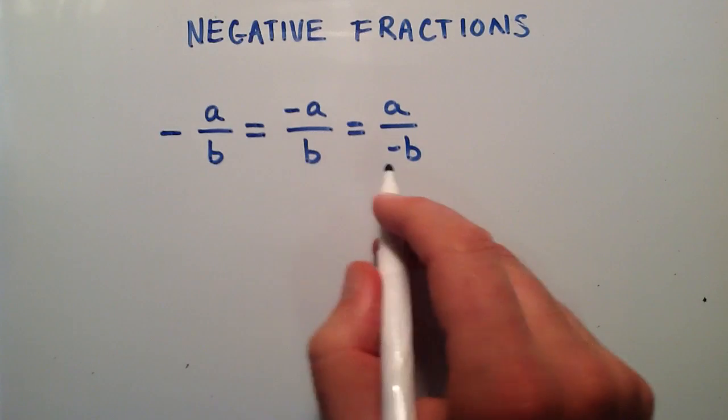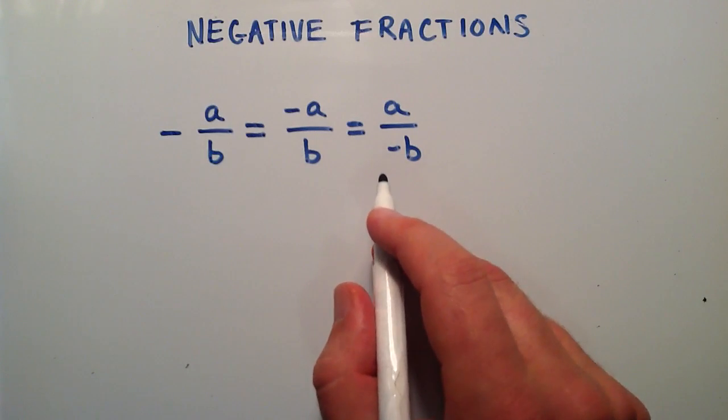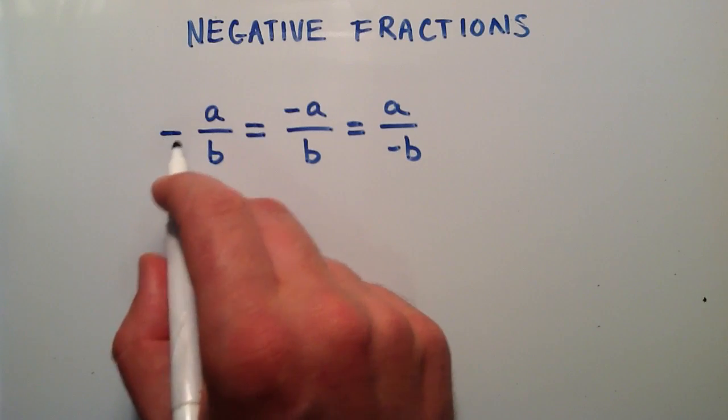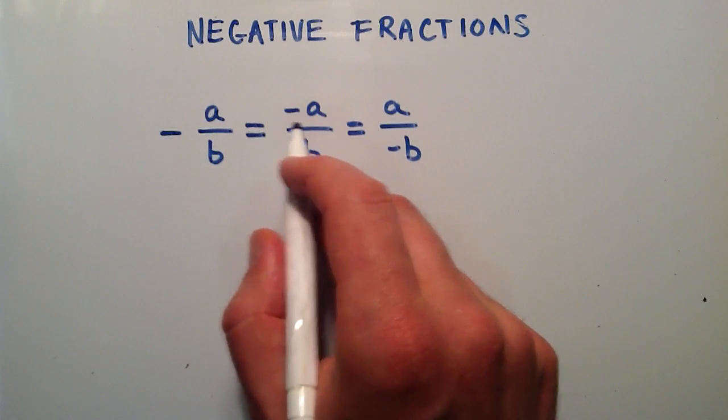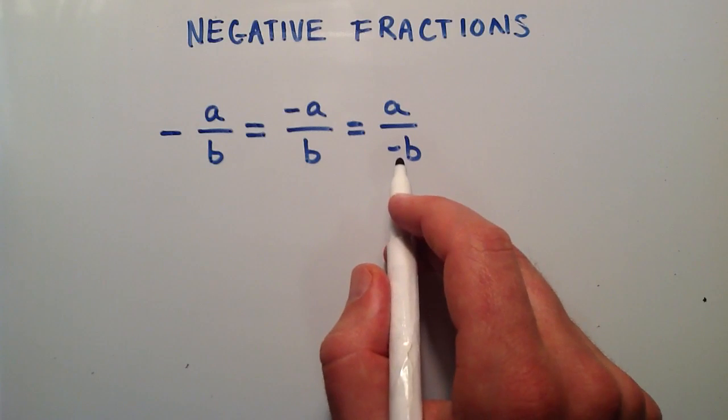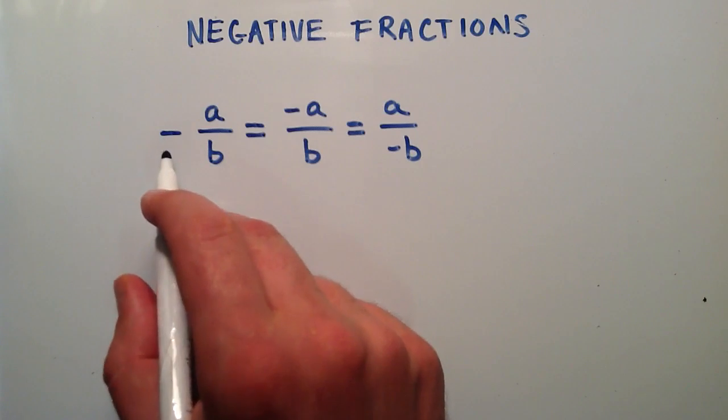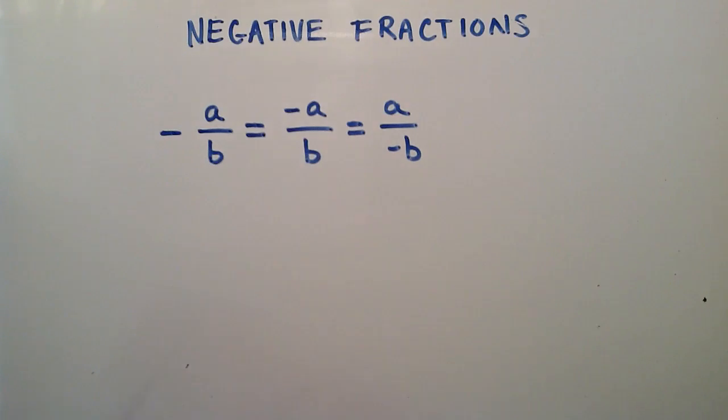So depending on what type of algebra expression you're working on, you may have something in this form and you may want to move that negative into the numerator or you may want to move it into the denominator. Or you may have it in this form and you maybe want to move the negative from the denominator back to the front. So I wanted to show you that you can do this, you can move that negative around however you want with these fractions into one of these three locations, and you'll still get the same correct answer.